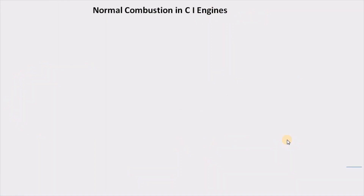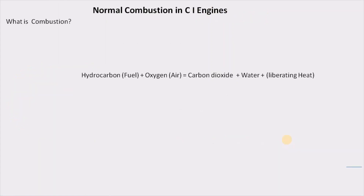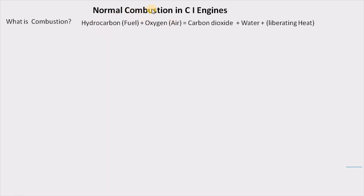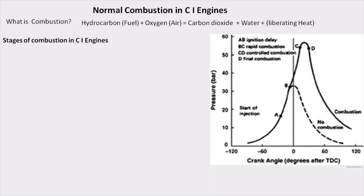We'll start with the discussion of what combustion is. Combustion is the burning of a hydrocarbon fuel in the presence of oxygen from the air to produce products like carbon dioxide and water, liberating heat which is used for producing work in a thermodynamic cycle. This combustion process in CI engines happens in certain stages, and points A, B, C, D correspond to the start and end of different stages on the pressure crank angle diagram for a CI engine.